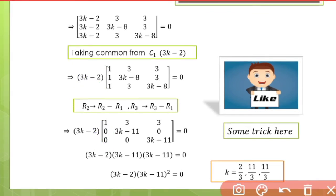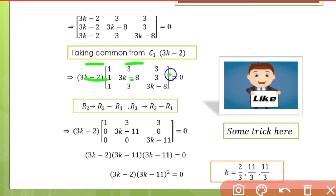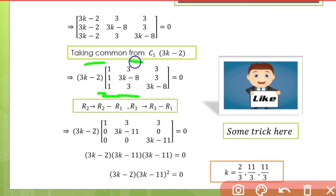After row operations, we get 3k minus 11 appearing in the matrix. The final form shows 3k minus 11 in key positions.